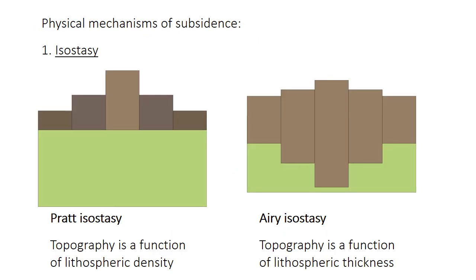There are two main mechanisms that contribute to subsidence — or to uplift, as the converse. The first, which is the most widespread, is isostasy, which you've learned about in previous courses. The topography or elevation of the Earth's surface is affected by two factors: first, lithospheric density, and second, the thickness of the lithosphere. The lithosphere itself is floating on the liquid asthenosphere — the liquid upper mantle. If the lithosphere is denser, it floats somewhat lower on the asthenosphere, so the elevation of the surface is lower compared to an equivalent crust that's less dense.